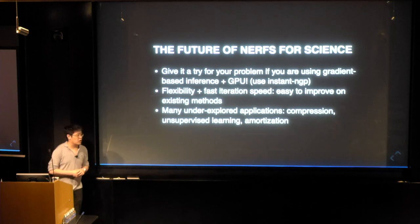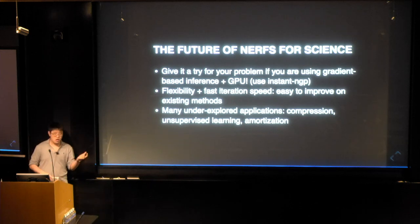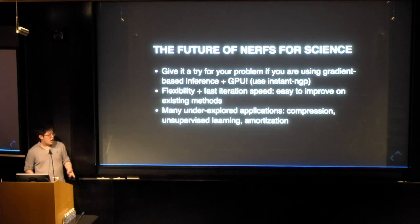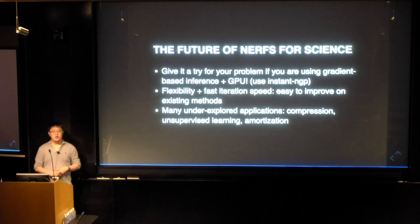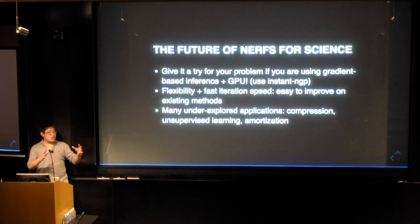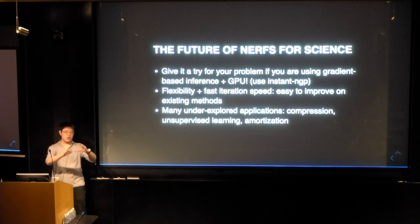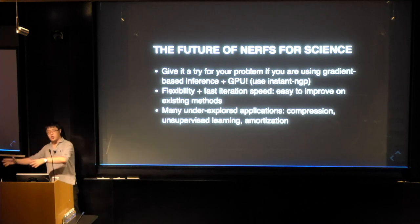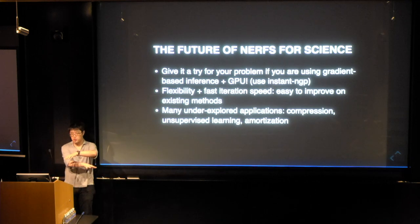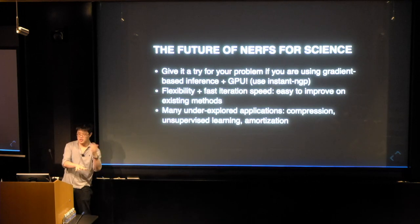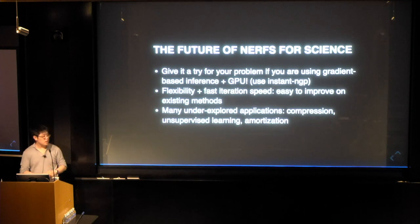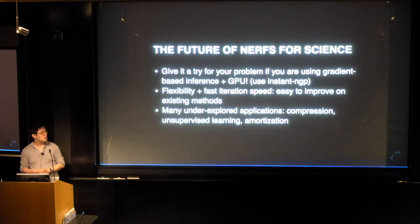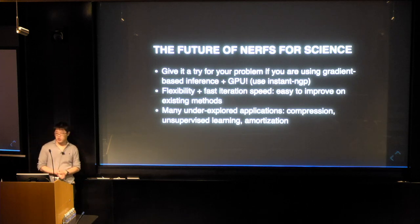We're still at the beginning, especially in science. There are probably many underexplored applications. Compression — I mentioned people are starting to think about this, but it's very not explored. There's also unsupervised learning: currently when I train a NeRF I share no information — I train it just on the data for this one scene. But I can imagine if I have different datasets, I could train NeRFs and try to share some information across them while keeping some private, running latents across datasets. And finally, you could try to amortize the NeRF itself, which could give you some interesting insights into the statistics. Thank you.